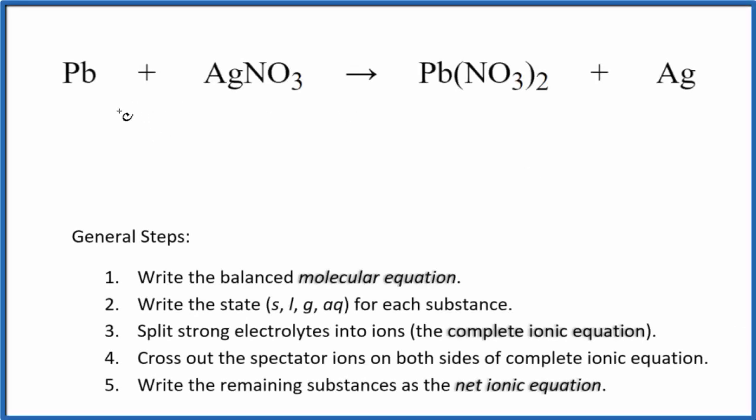In this video we'll balance the net ionic equation for lead plus silver nitrate. The first thing we'll do is balance the molecular equation. We can see we have two nitrates here and just one here, so let's put a 2 in front of the silver nitrate. Now we have two nitrates, two silver atoms, so put a 2 here. Lead, lead, those are balanced. This is the balanced molecular equation.